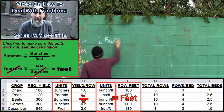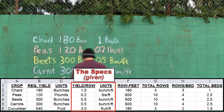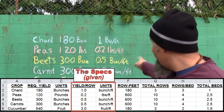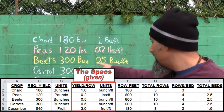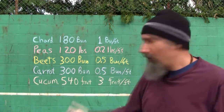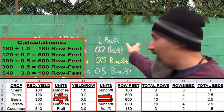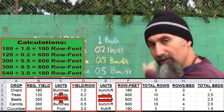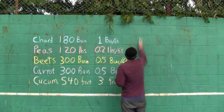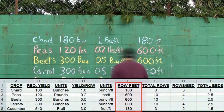Our expected yield per crop: one bunch of chard per foot, 0.2 pounds of peas per foot, 0.5 bunches of beets per foot, 0.5 bunches of carrots per foot, and 3 fruit per foot for cucumber. We take our total quantity needed and divide by the expected yield, giving us: 180 feet of chard, 600 feet of peas, 600 feet of beets, 600 feet of carrots, and 180 feet of cucumber.